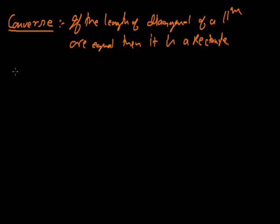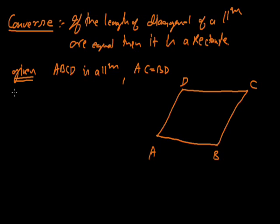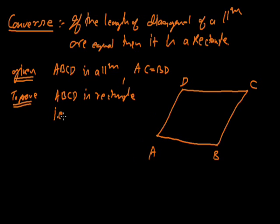What is given to us? ABCD is a parallelogram in which diagonals are equal, that is AC equals BD. We have to prove that ABCD is a rectangle — meaning we have to prove all angles are 90 degrees, specifically angle DAB equals 90 degrees. Let's see the proof.